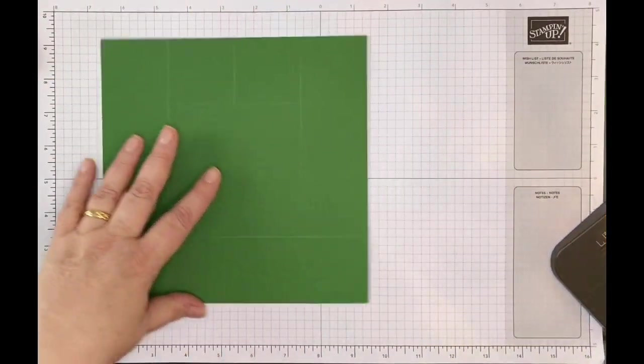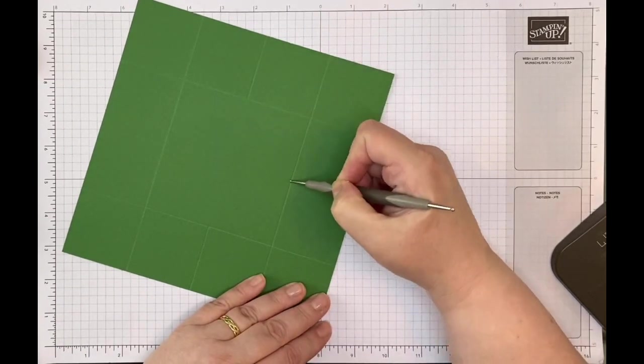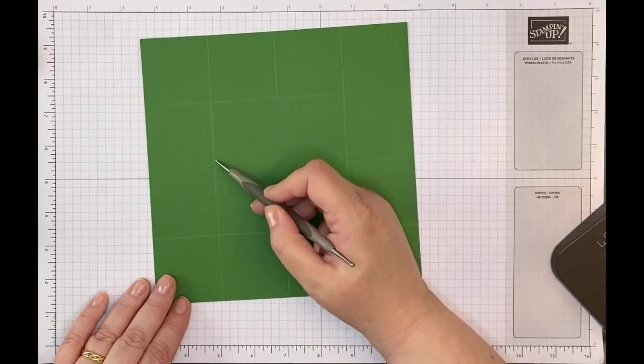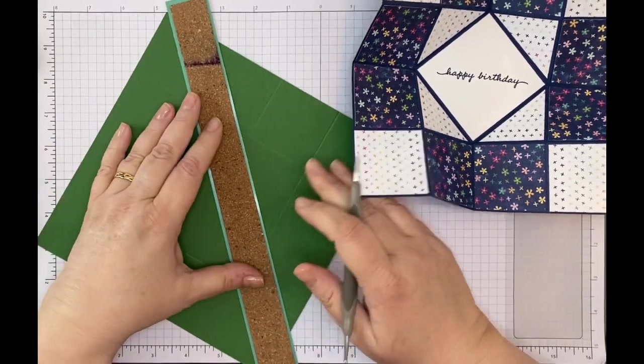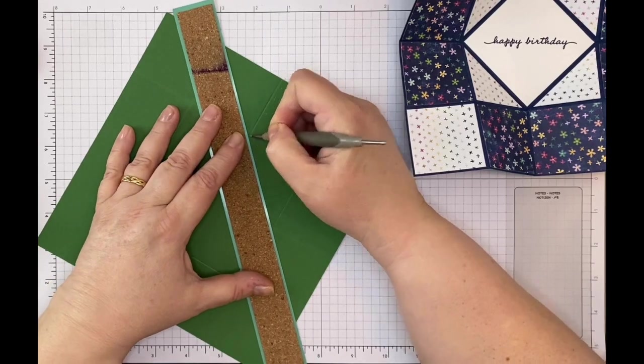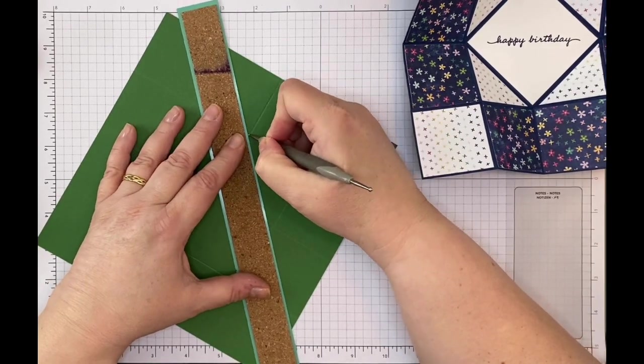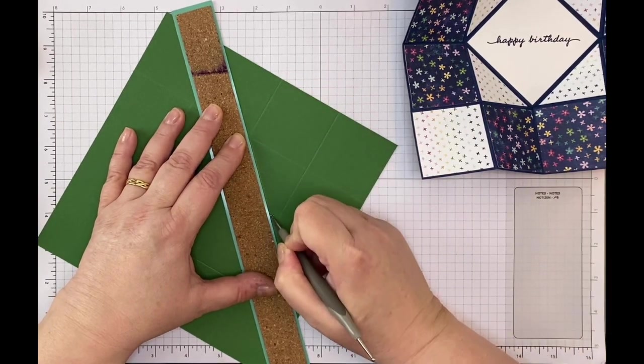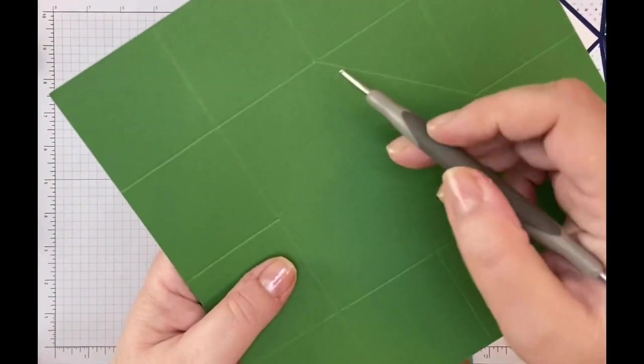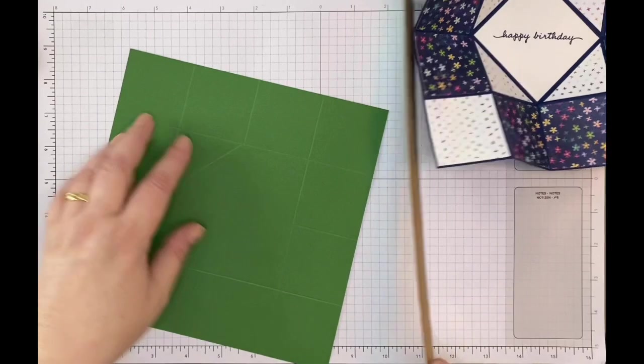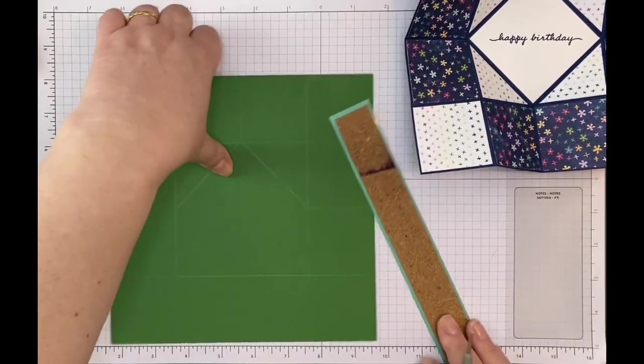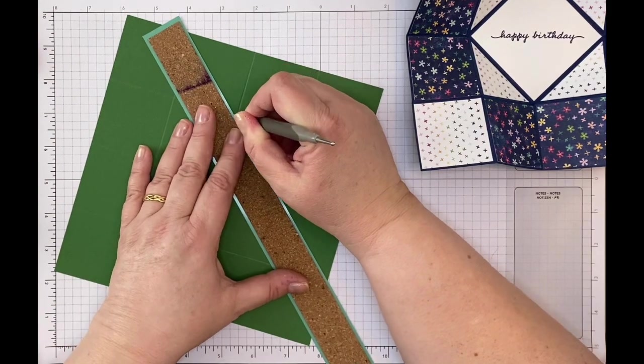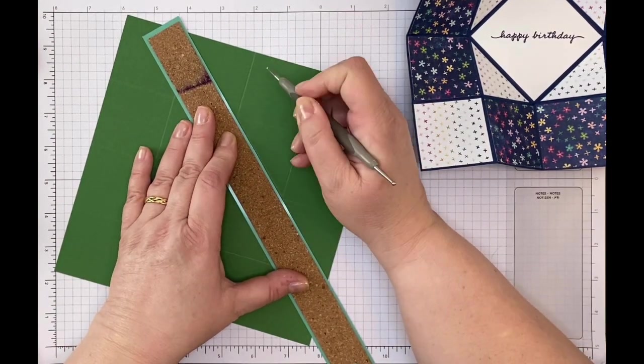So now you need to get out your ruler and you need to score from center point to center point to center point again, and you basically are making a diamond pattern in the center. So here's my ruler. I'm going to turn it over because it's got a lip on it, and I'm going to find the point here and take it to this center point. Do it twice. So you can see I've taken that center point there to that one. And I'm going to repeat that until I've got four lines creating my diamond shape in the center.